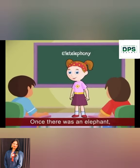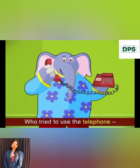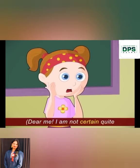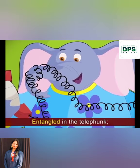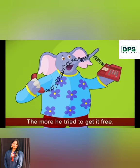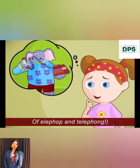Recitation of the poem Elie Telephony: Once there was an elephant who tried to use the telephone. Dear me, I am not certain quite that even now I have got it right. However it was, he got his trunk entangled and tangled in the telephone. The more he tried to get it free, the louder burst the telephone. I fear I had better drop the song of Elephop and Telefunk.